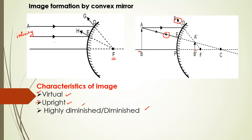So anywhere you keep the object for a convex mirror — whether at infinity or somewhere closer — the image is going to be a diminished virtual image. There are only two cases for the convex mirror. This is what is about the convex mirror image formation and concave mirror image formation.